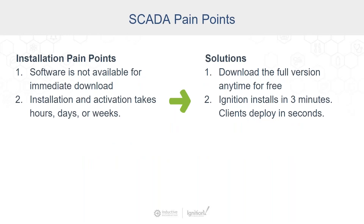Let's say you have your hardware and your software all picked out and you're ready to start building. Now it's time for installation, but we have a problem. The software is not available for immediate download, and the installation and activation takes hours, days, even weeks. Well, you can download a fully functional version of Ignition anytime — as in right now — for free.